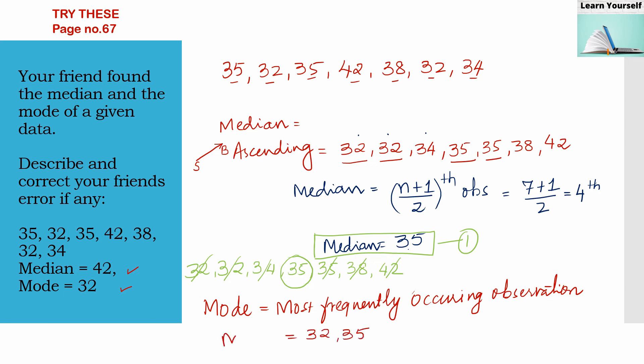So here we have two modes, and that is 32 and 35, because both the numbers are appearing twice in our data. So what is our mode? Most frequently occurring observation is the mode.